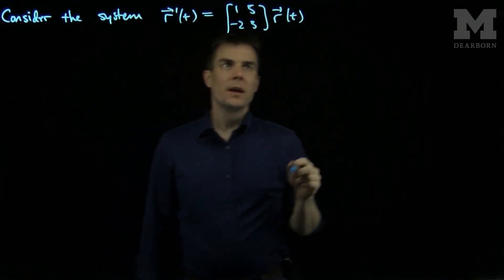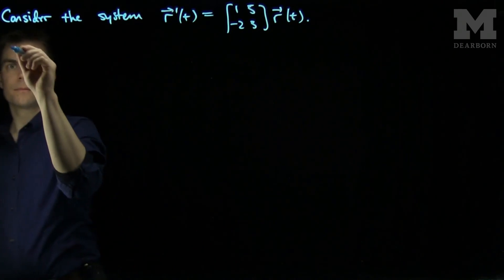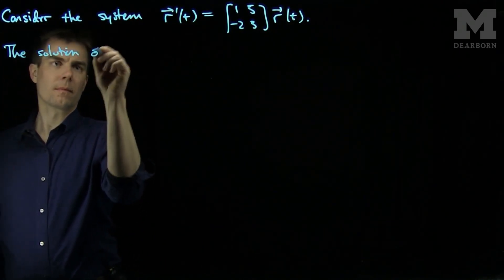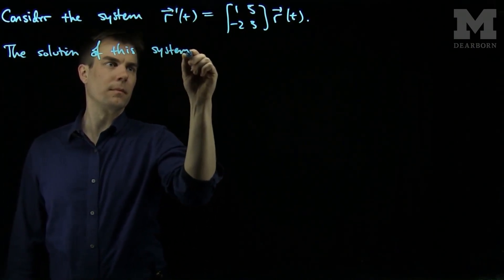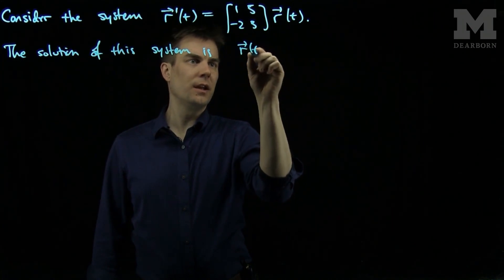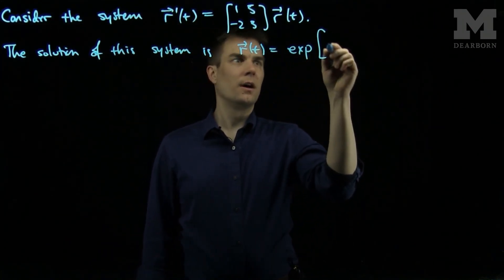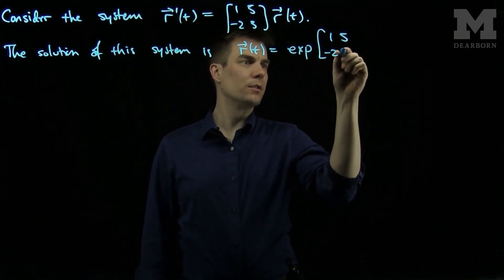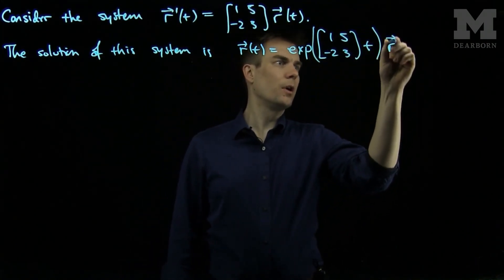We'll solve this using the matrix exponential method. The solution of this system is r(t) equals the exponential of the matrix [[1, 5], [-2, 3]] times t, applied to r(0).